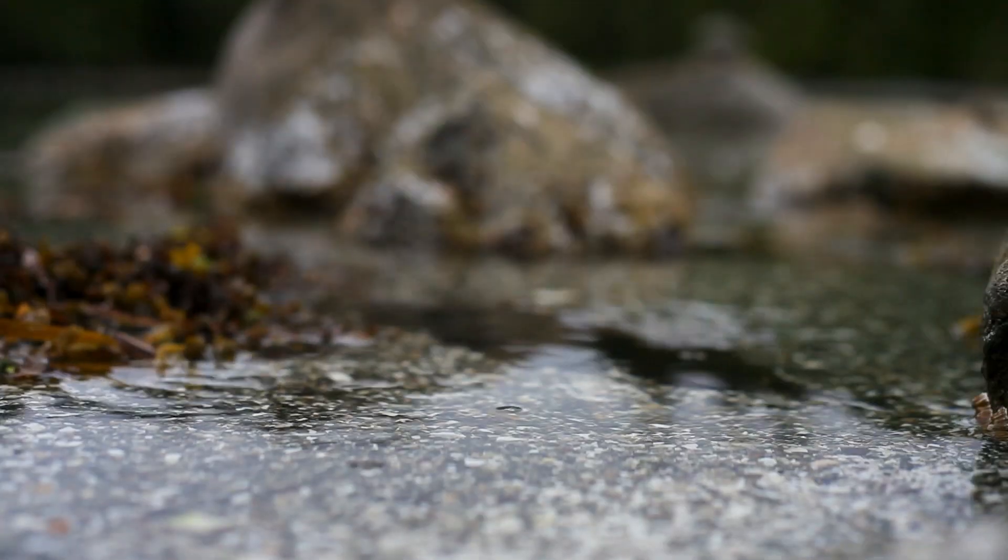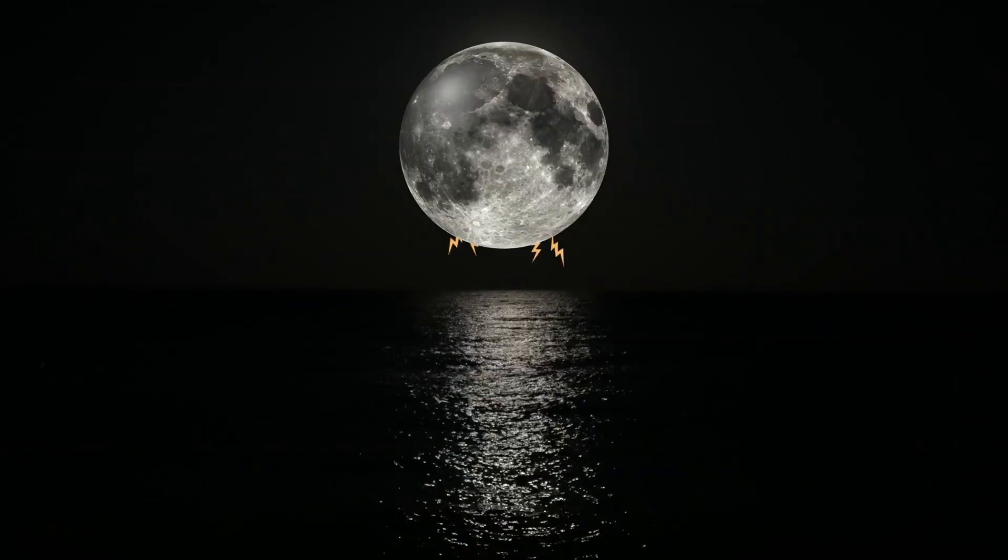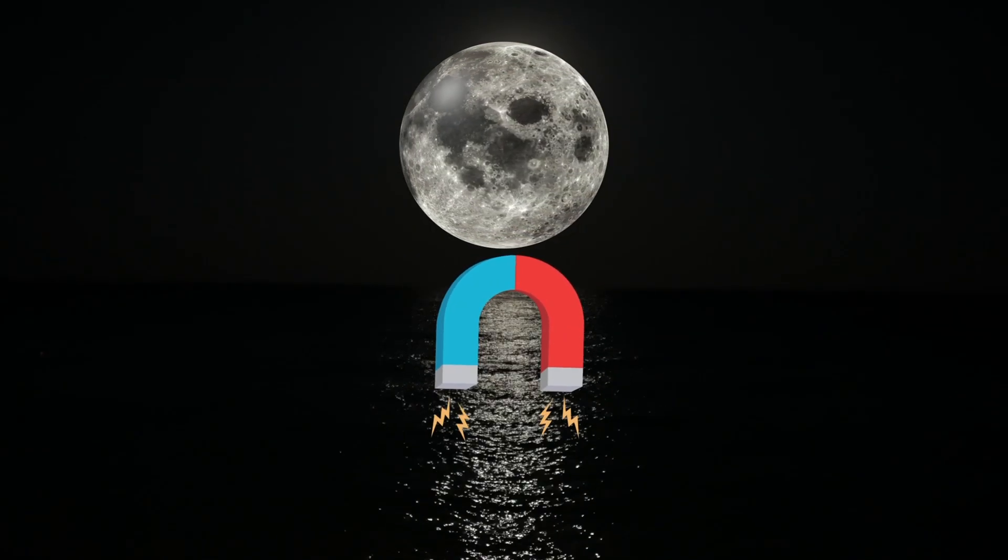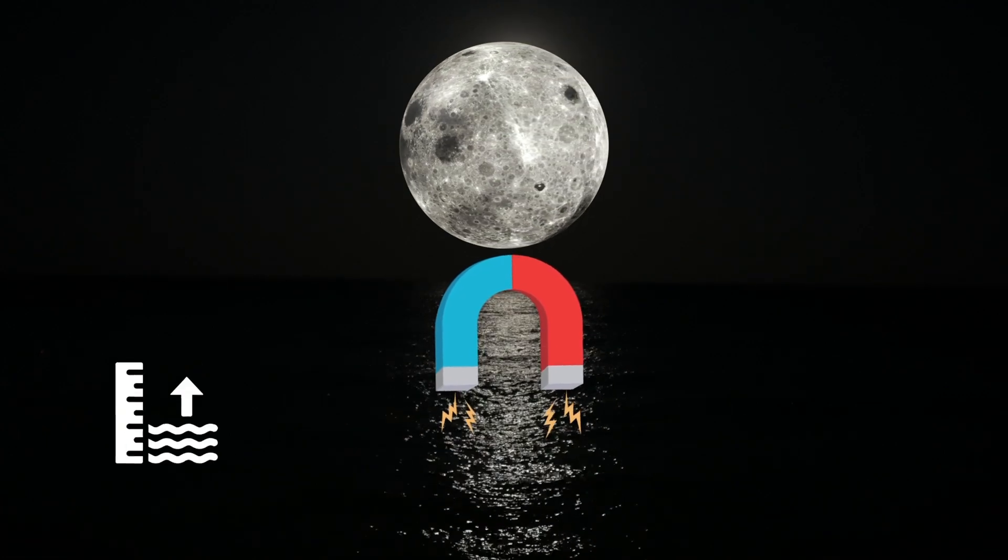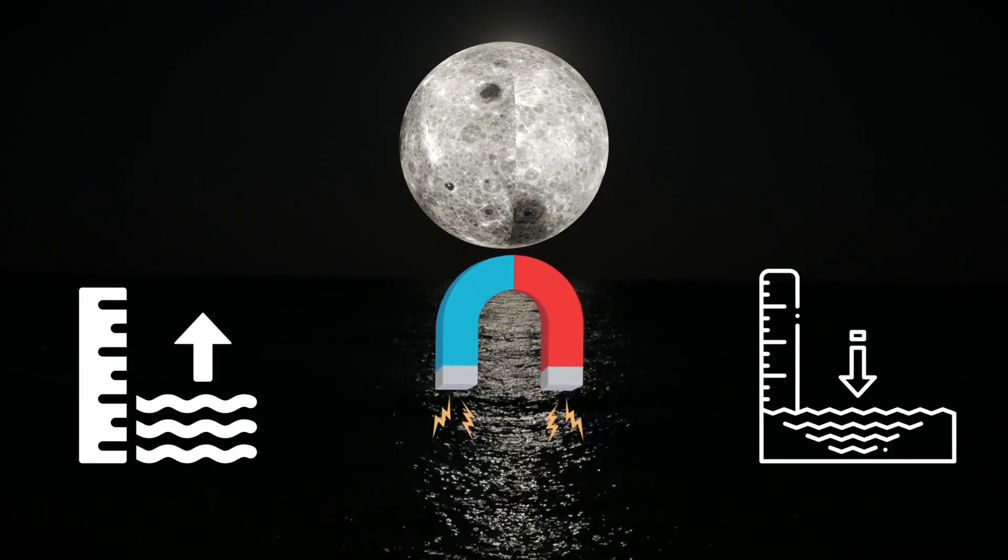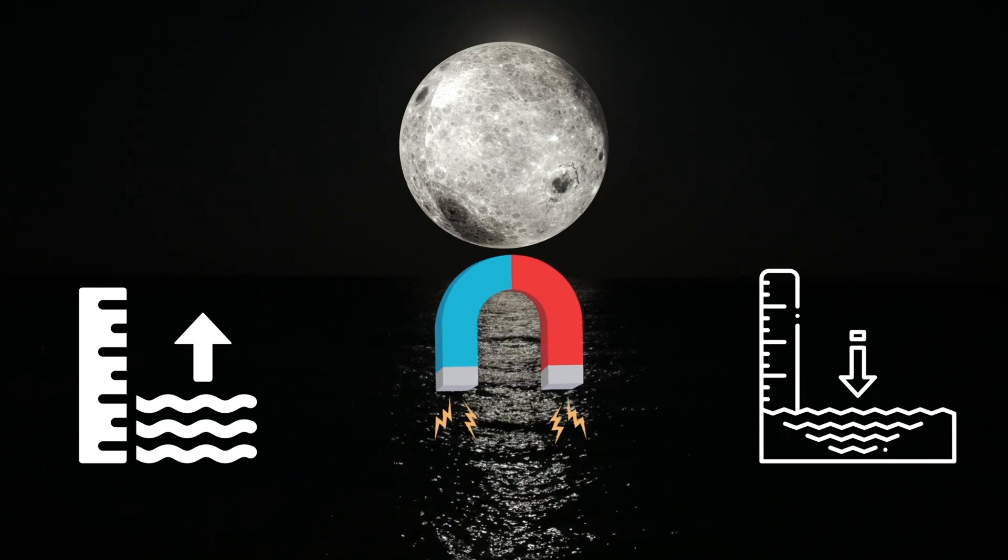Fact number one, the moon helps create tides in our oceans. Just like a giant magnet, the moon's gravity pulls the water towards it, causing high and low tides. This movement of water is super important for life in our oceans.